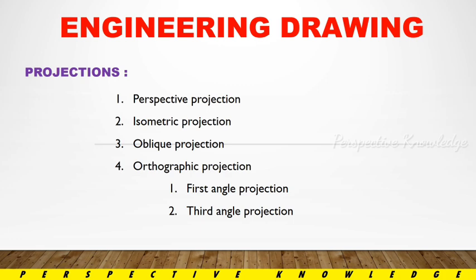In engineering drawings, we use projections. There are 4 types of projections: perspective projections, isometric projections, oblique projections, and orthographic projections. For a projection, we see an object at the same angle — we see how we focus on it, and that view is the projection.